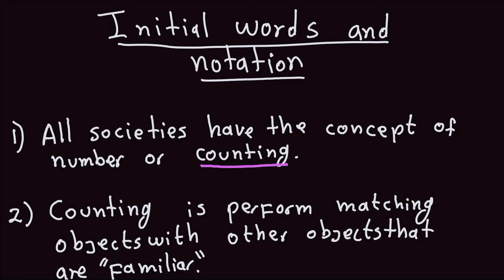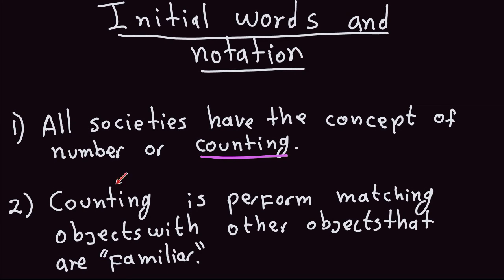The first thing I want to talk about is that number theory really starts with the concept of counting. If you look at all societies, even the most primitive ones have the concept of counting. They need it to count the number of cows they have or the number of belongings. For whatever reason, they need the concept of counting.